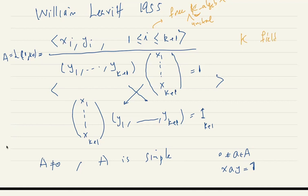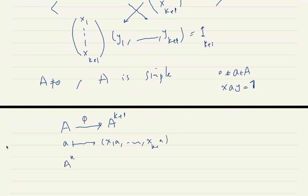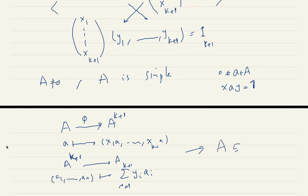The next thing he shows is that one copy of A is isomorphic to (k+1) copies of A as a left or right A-module. You send A to (k+1) copies of A, and the other way you send (a₁, ..., aₙ) to the sum of yᵢaᵢ for i from one to k+1. So A is isomorphic to A^(k+1) as a module.